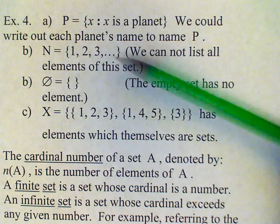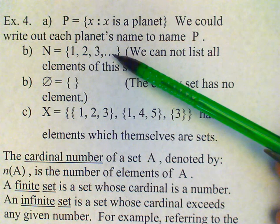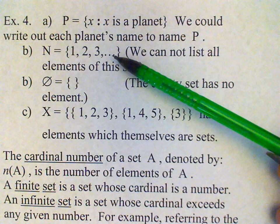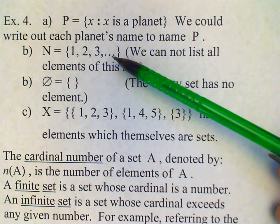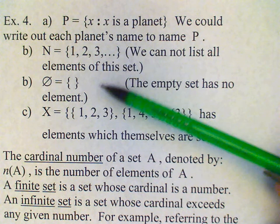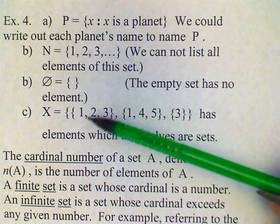We've already looked at this set here. The set N consisting of all the counting numbers. In this case, of course, we cannot list all the elements of this set. We've talked about the empty set.